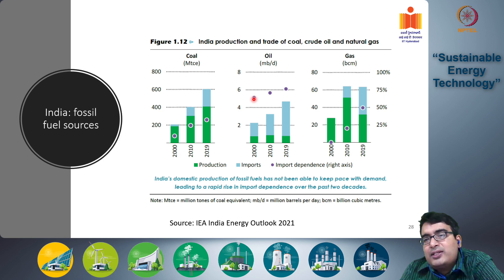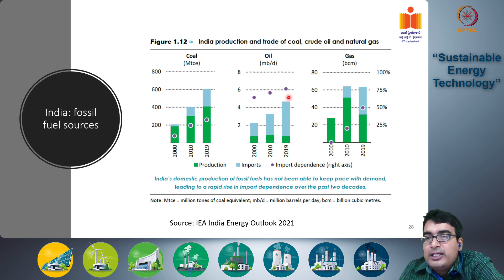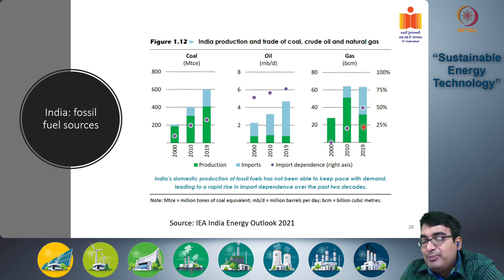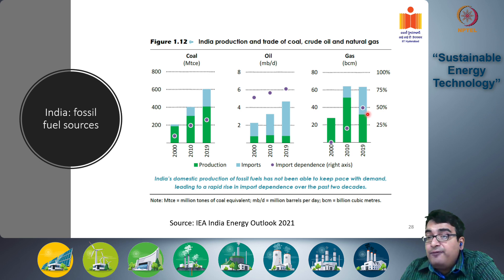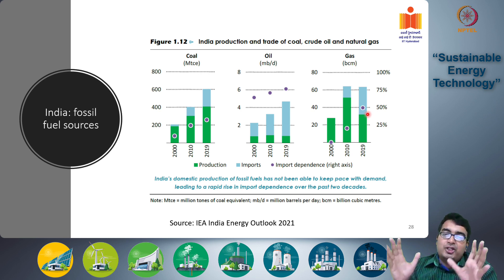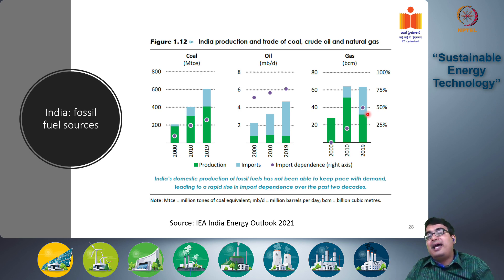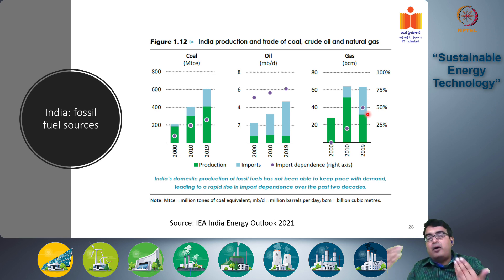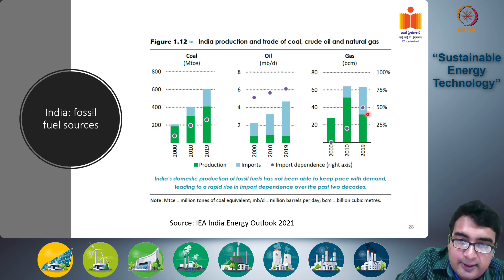For oil the situation is worse: even in 2000, import dependence was around 60 percent — meaning 60 percent of oil for cars and buses came from abroad — and by 2019 this had risen to 75 percent, since domestic oil production has not increased while consumption has. For natural gas, in 2000 almost all was domestically sourced, but by 2019 around 50 percent is coming from abroad. India is therefore extremely vulnerable to international market shocks in oil, gas, and increasingly in coal.